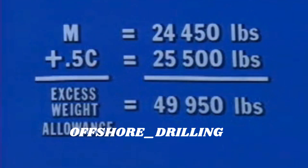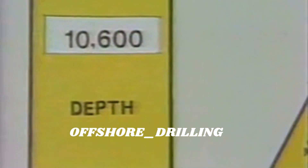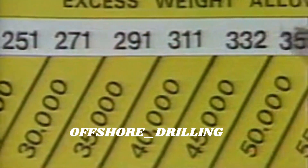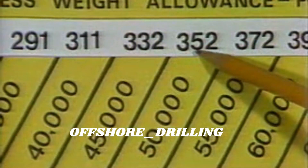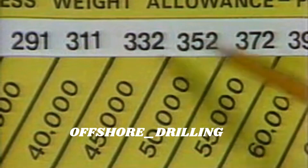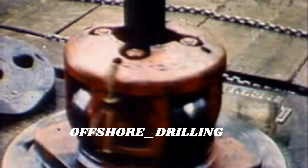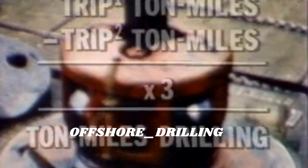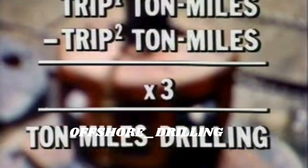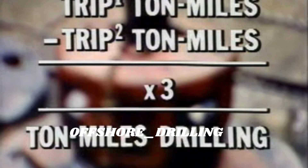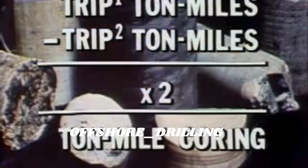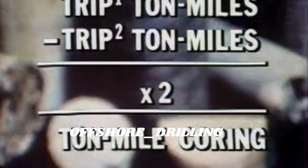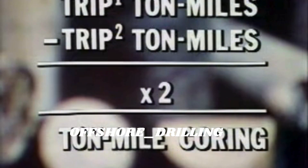Now set the slide rule to the depth of the trip. In the section labeled ton-mile tables, look above the figure closest to your excess weight allowance. This gives you the number of ton-miles worked in a round trip. To figure ton-miles drilling, take the difference between round-trip ton-miles before and round-trip ton-miles after drilling, then multiply by three. For ton-miles coring, take the difference in round-trip ton-miles before and after coring and multiply by two.